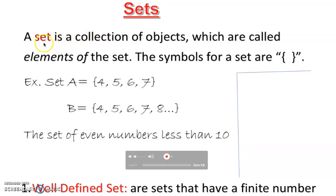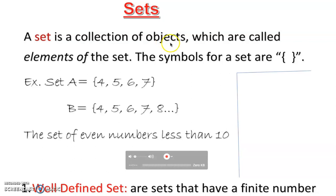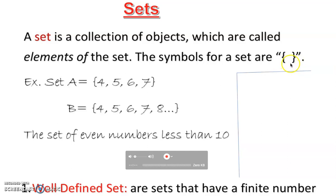A set is a collection of objects — in this case, objects refer to numbers, words, names, or anything you can come up with. These objects are called elements. An element is a member of the set. The symbol for a set uses a specific notation called braces — open braces and close braces.